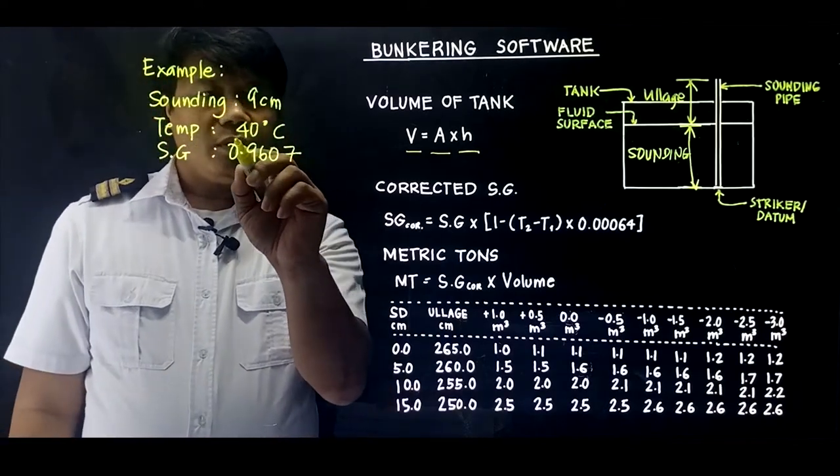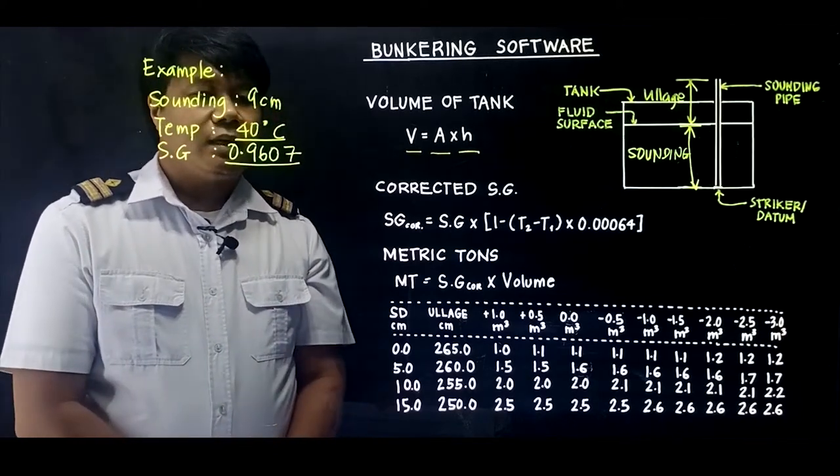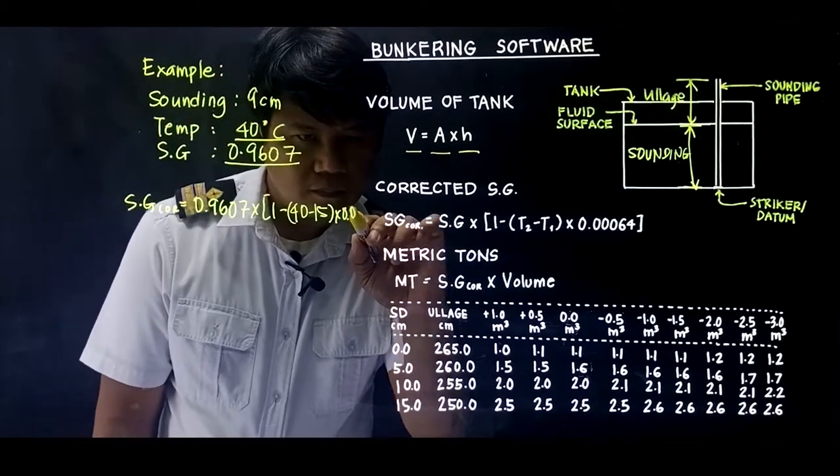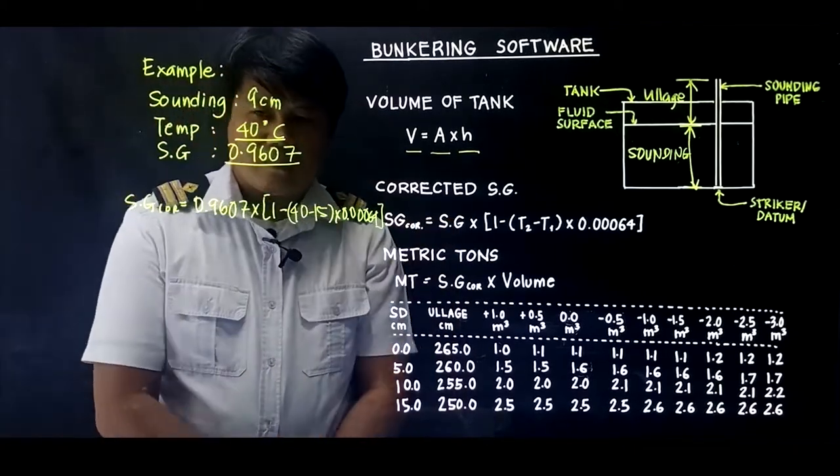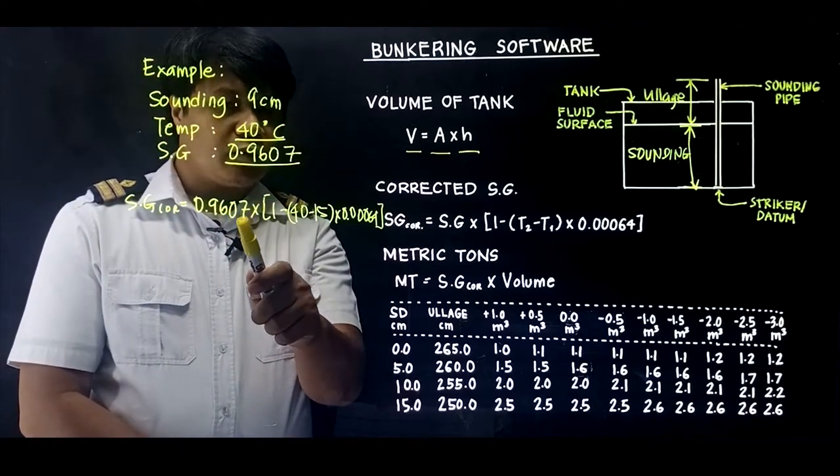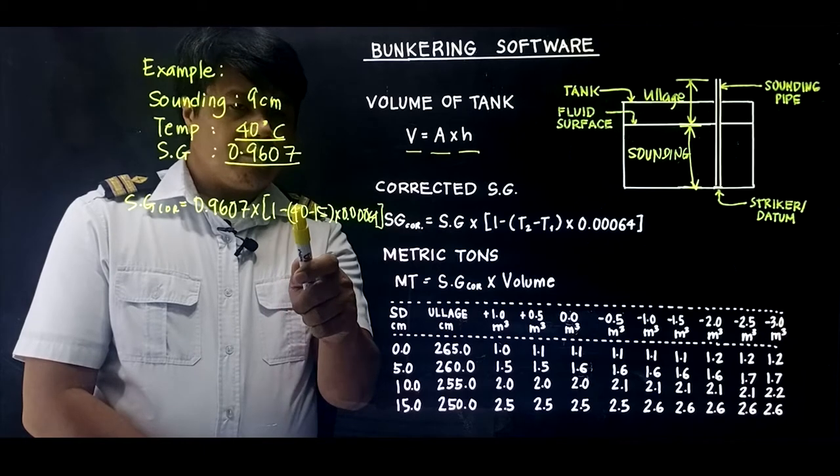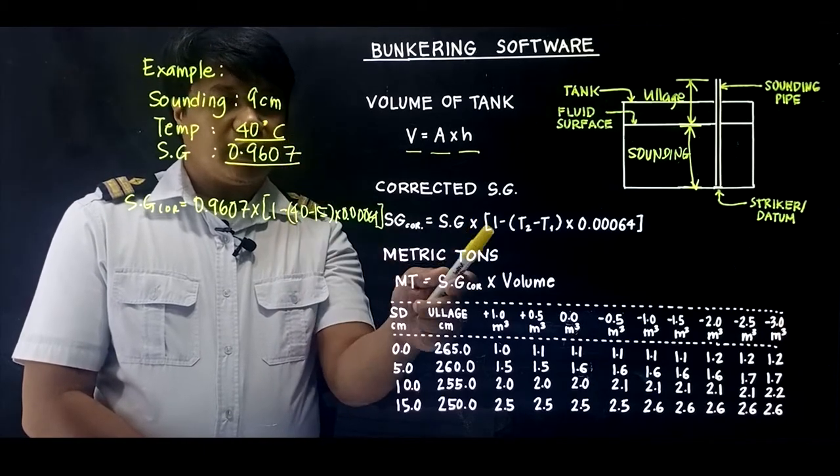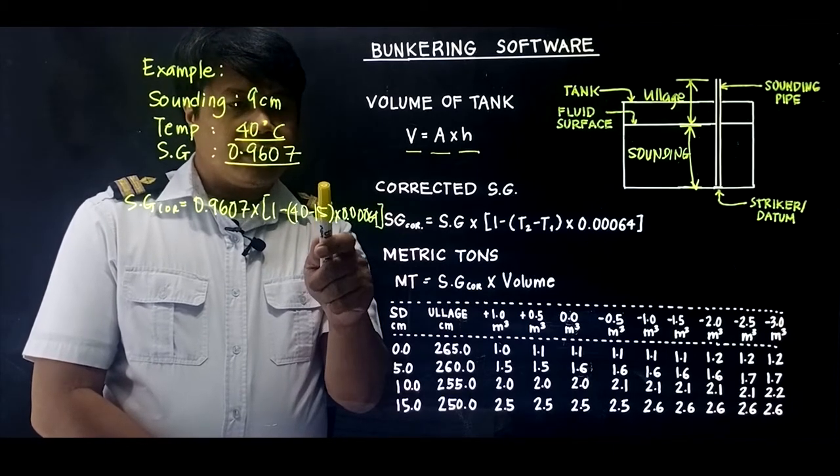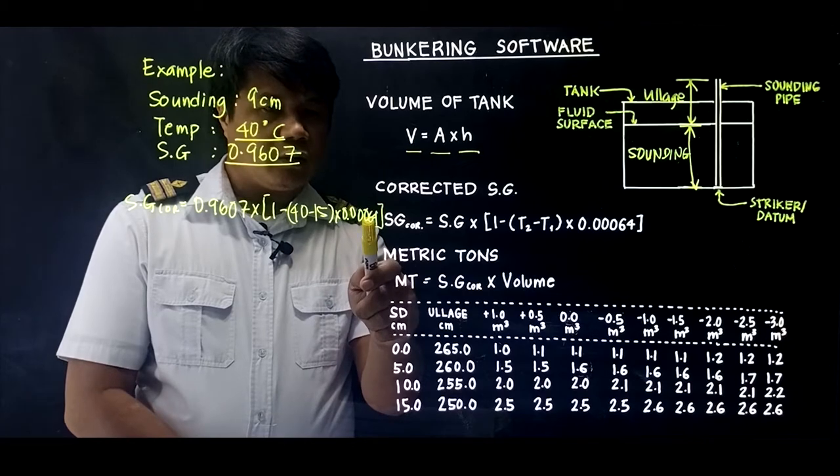So let us solve for the example of 40 degrees Celsius with a given specific gravity of 0.9607. So SG corrected equals 0.9607, the specific gravity supplied by the barge, times 1 minus 40 degrees Celsius, the present temperature, minus 15 degrees Celsius, the temperature in which this specific gravity was tested in the laboratory, times 0.00064.